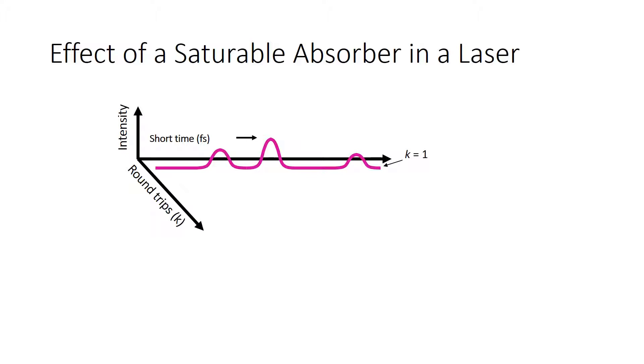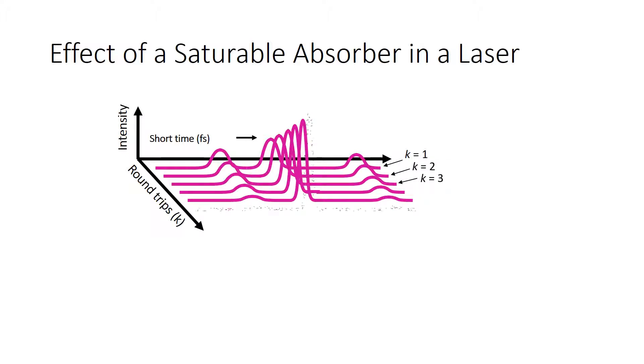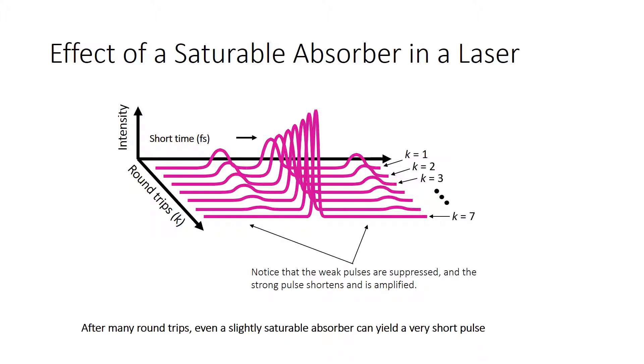So what happens when a saturable absorber is present in a laser cavity is that radiation spikes are suppressed if they are low intensity, while higher intensity spikes are enhanced, amplified and compressed, giving rise to short and high intensity laser pulses.